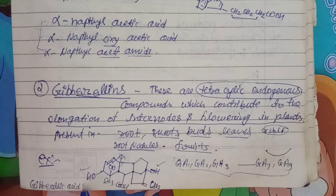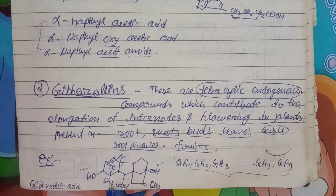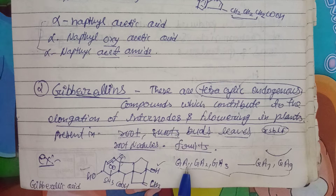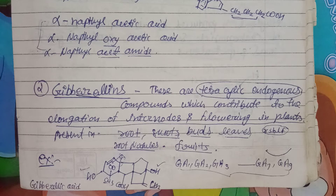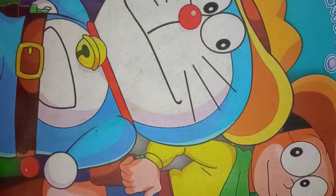Now coming to Gibberellic acid — this is the example. Here a six-membered ring, five-membered ring, again six-membered ring, and one square-like thing is going to be there — OH hydroxyl group, CH₂, CO, CH₃, OH inside CO — like that you can remember. Then Gibberellic acid 1, Gibberellic acid 2, Gibberellic acid 3, 7, 9 — like that there are so many derivatives of Gibberellic acid that can also be part of your answer.